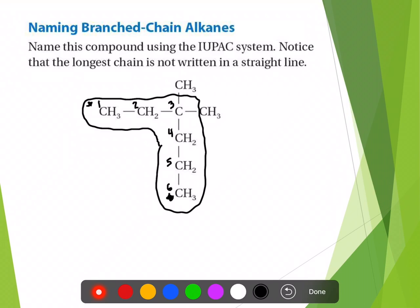Rule number three says that the groups attached are named based upon their makeup. If you look at each group attached, both of these are made of carbon. So that means it's going to have the prefix meth, eth, or any of the others. Because it's carbon, we're going to use the carbon prefixes. All of those can be found on the back of the rule page that I gave you. You can actually go ahead and name the parent chain. They all have single bonds — that's all we've talked about so far. If you look at the back of the page, there are prefixes and suffixes. The prefixes tell you the number of carbons involved in the group you are currently focusing on, which in this case is going to be the parent chain.